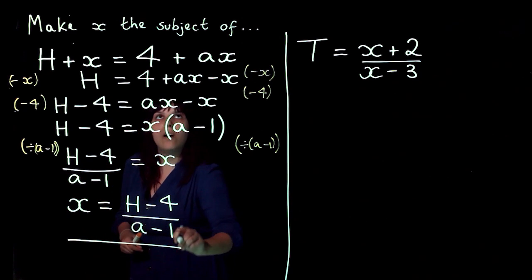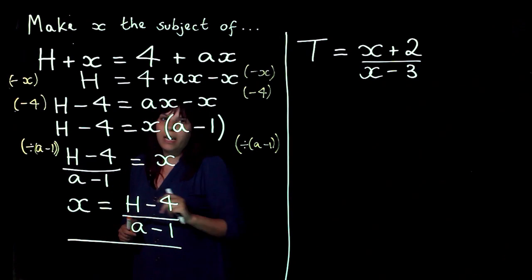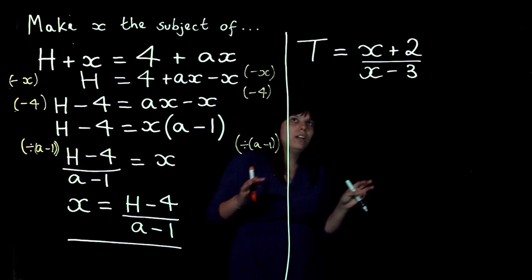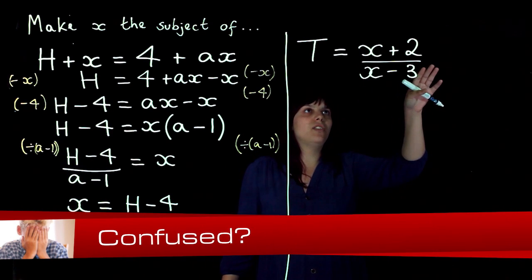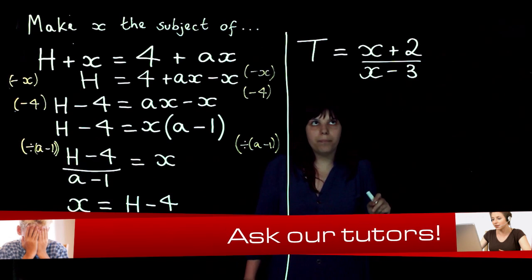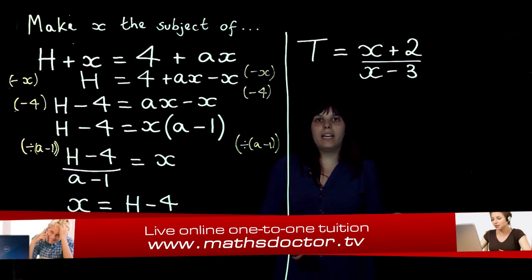So that is our original equation rearranged to make x the subject. Now if I look at this example, I've got t equals x plus 2 divided by x minus 3. So again, I want x to be on its own.